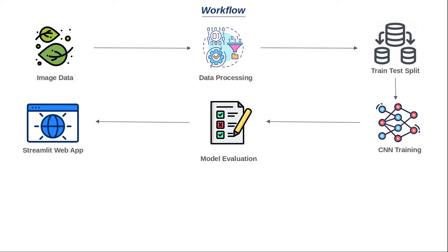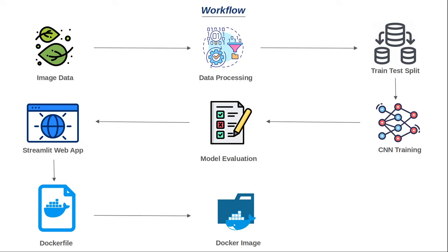Once the model has been saved, we will build a Streamlit web app around it, loading the trained model file in the Streamlit Python script where the user can upload an image and get a prediction. After that, the next step is dockerizing this. We create a Dockerfile with instructions to build a Docker image, then build the Docker image and create Docker containers. You can also push this to a Docker repository like Docker Hub or container registries on Azure or AWS, but we won't be discussing that here.